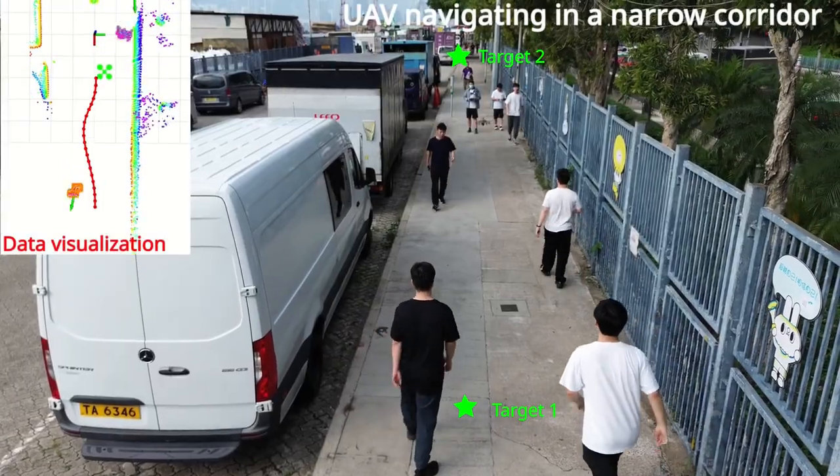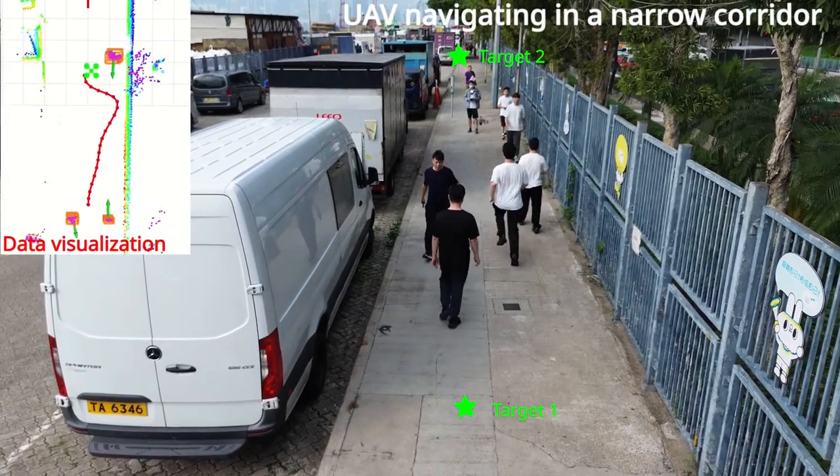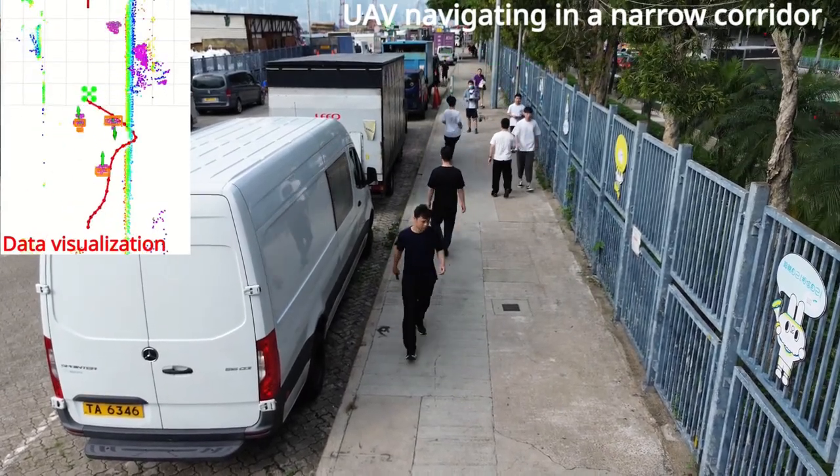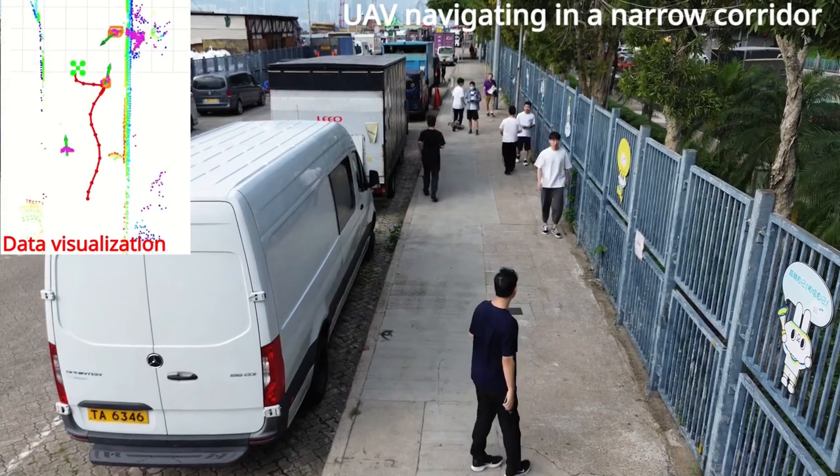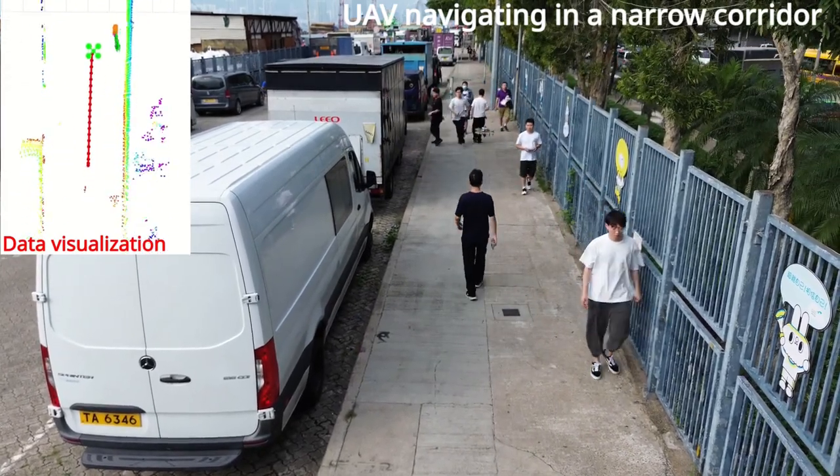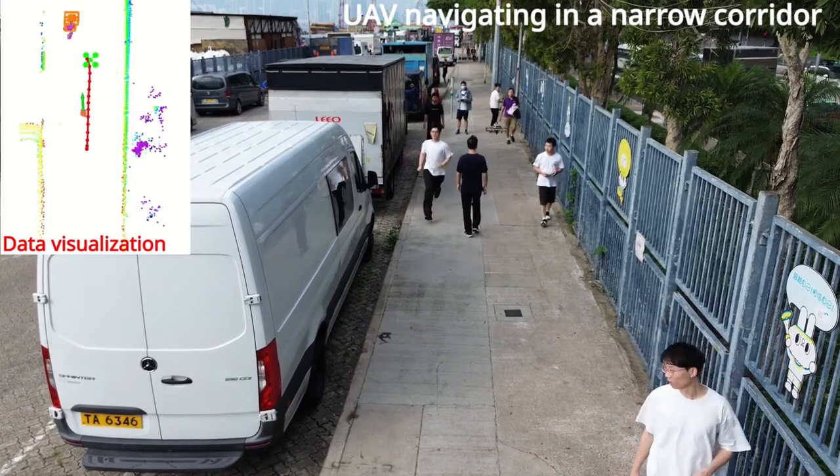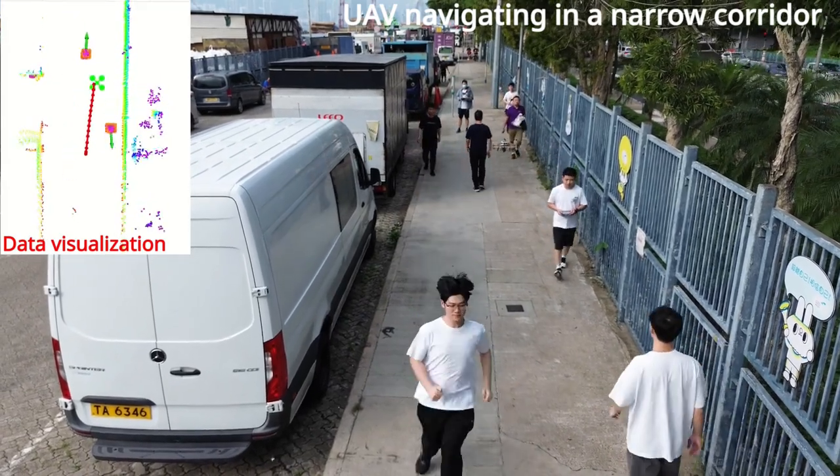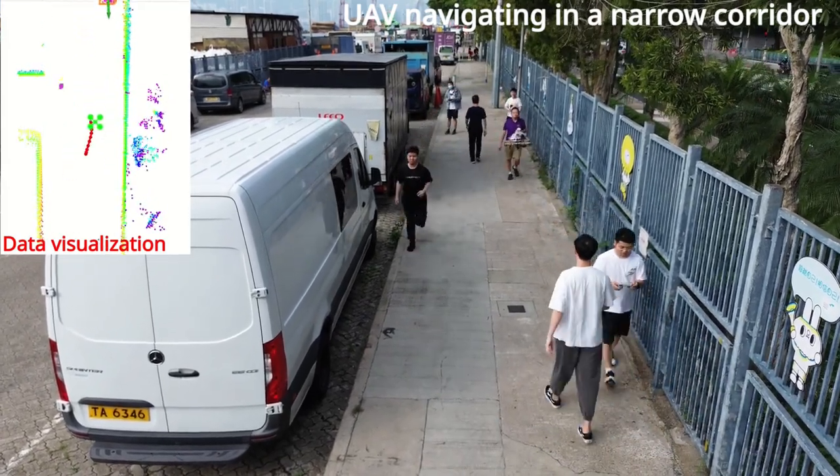The last scenario is a very challenging one, in which the UAV has to fly back and forth in a narrow corridor full of pedestrians whose motions include walking and even running. FAPP can enable the UAV to fly successfully in such a challenging scenario without collisions.